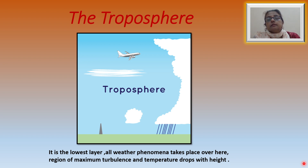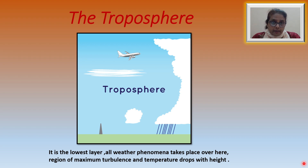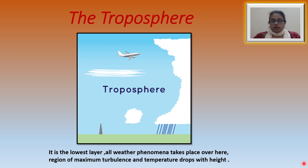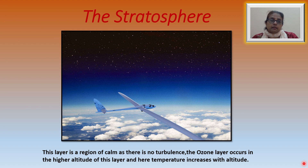The tropopause is the upper limit of the troposphere. It is at a height of 18 kilometers at the equator and 8 kilometers at the poles, so the height of the troposphere varies from place to place and season to season. The stratosphere starts where the troposphere ends — that is, at the tropopause.